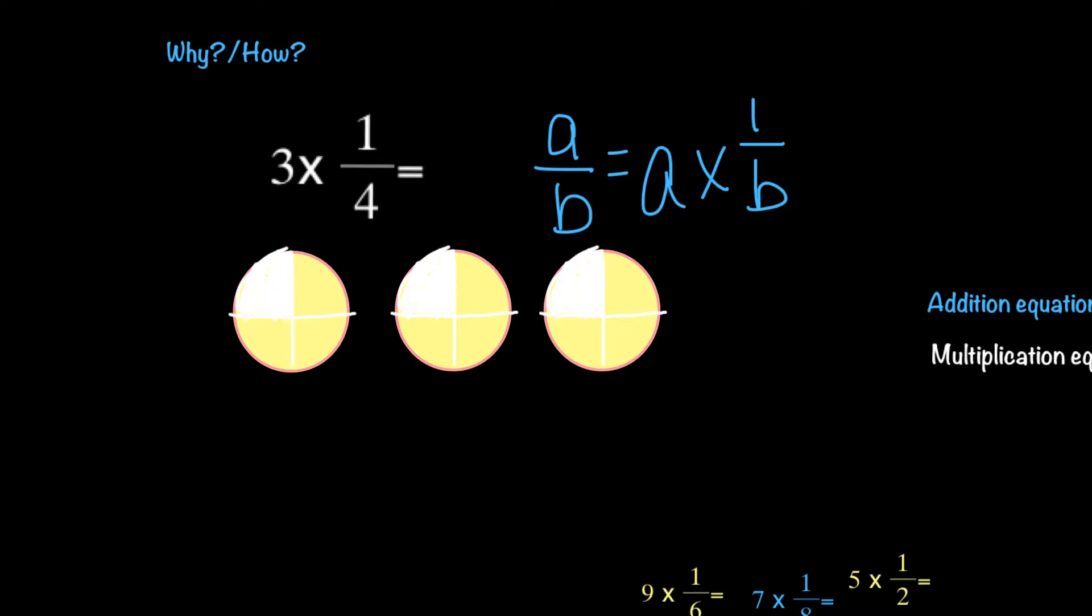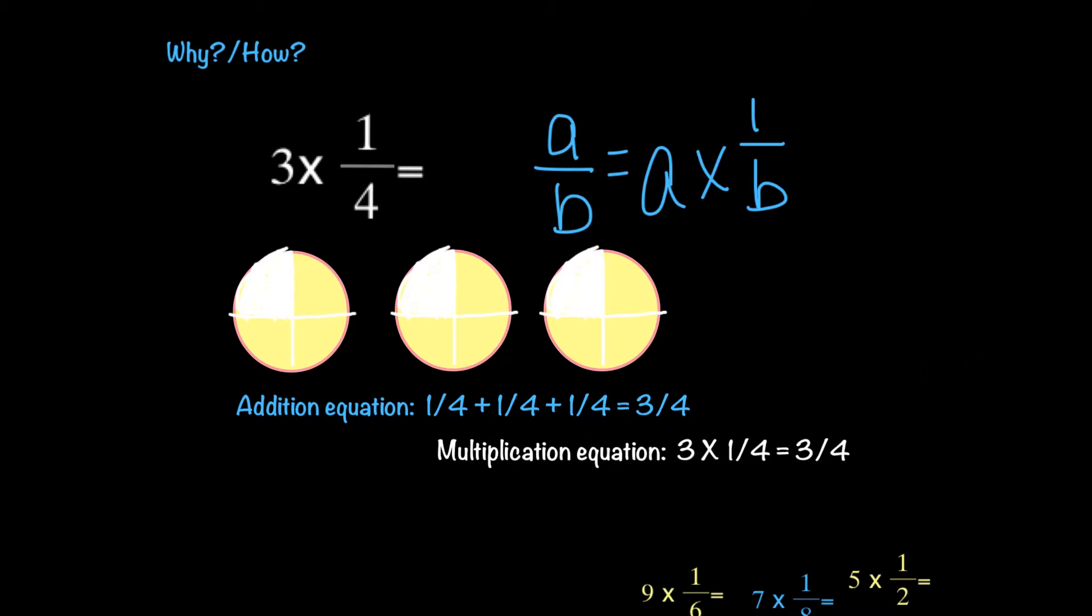So first I want to think about how do I go about that? Well I could look at an addition equation. So I would have 1/4 plus 1/4 plus 1/4 equals 3/4, or I can make a multiplication equation from that, which is what we have at the top there, 3 times 1/4 equals 3/4. I get the same answer. So just a couple of different ways to think about solving that particular problem.